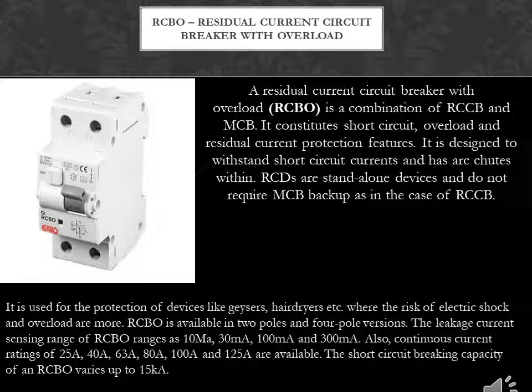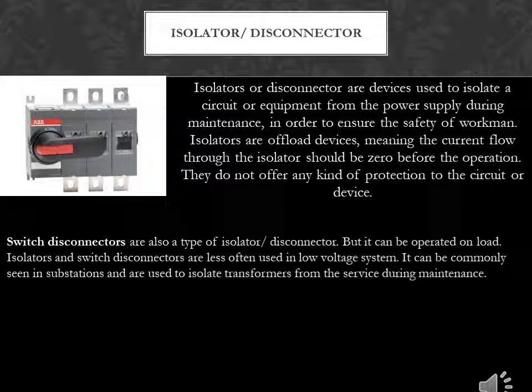The short circuit breaking capacity of an RCBO varies up to 15 kA. Isolators or Disconnectors are devices used to isolate a circuit or equipment from the power supply during maintenance, in order to ensure the safety of workmen. Isolators are offload devices, meaning the current flow through the isolator should be zero before operation. They do not offer any kind of protection to the circuit or device. Switch disconnectors are also a type of isolator/disconnector, but can be operated on load.